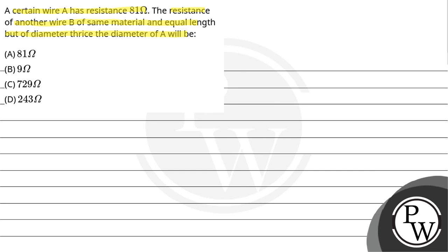So here our key concept is that the resistance of a conductor R is given by the relation R equals rho L by A. The resistance is directly proportional to length L and inversely proportional to the cross sectional area.